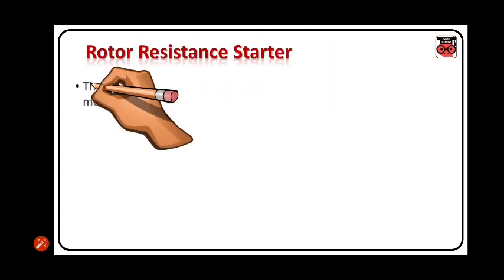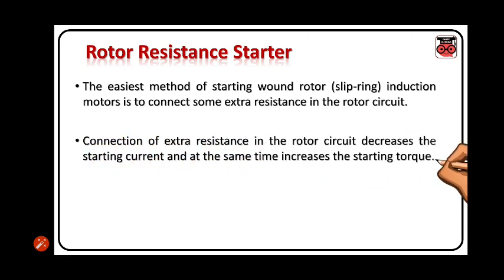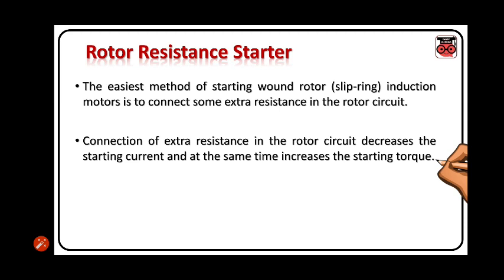Rotor Resistance Starter. The easiest method of starting wound rotor induction motors is to connect some extra resistance in the rotor circuit. Connection of extra resistance in the rotor circuit decreases the starting current and at the same time increases the starting torque.